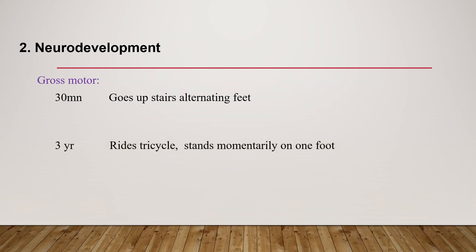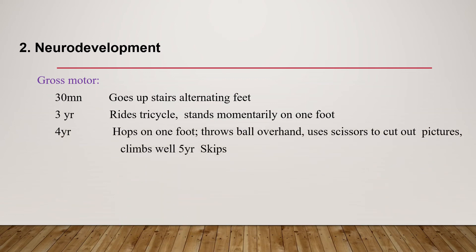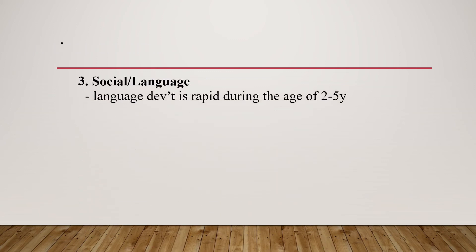Neurodevelopment at preschool age: at three years, they go upstairs with alternating feet, ride a tricycle, and stand momentarily on one foot. At four years, they hop on one foot, throw a ball overhand, use scissors to cut pictures, and climb well. At five years, they skip. Fine motor: at three years, they copy a circle; at four years, they copy a square.